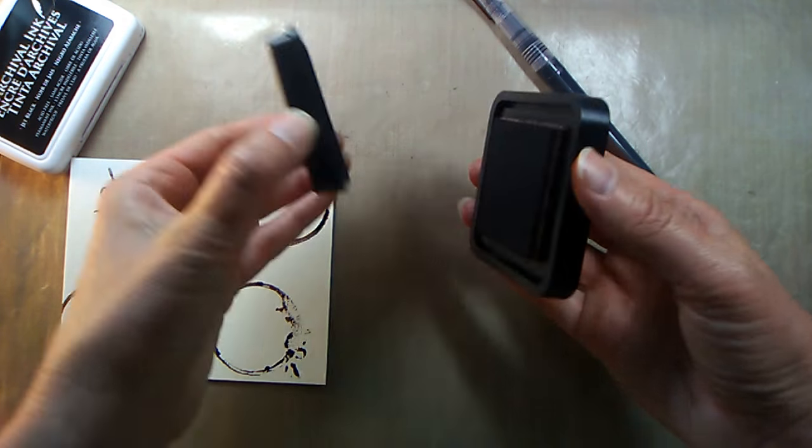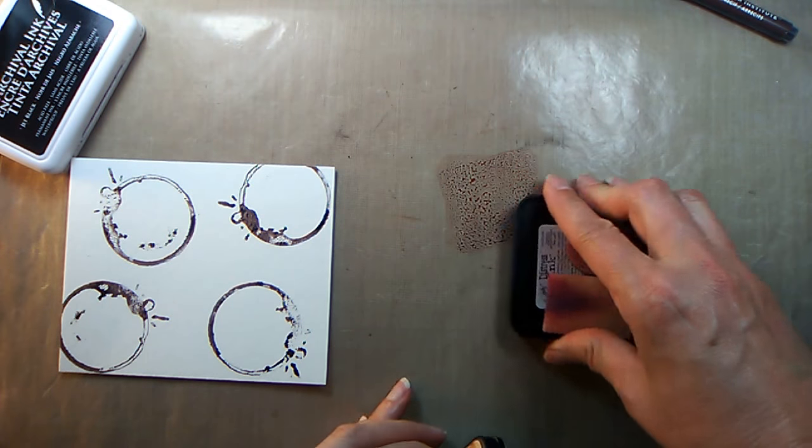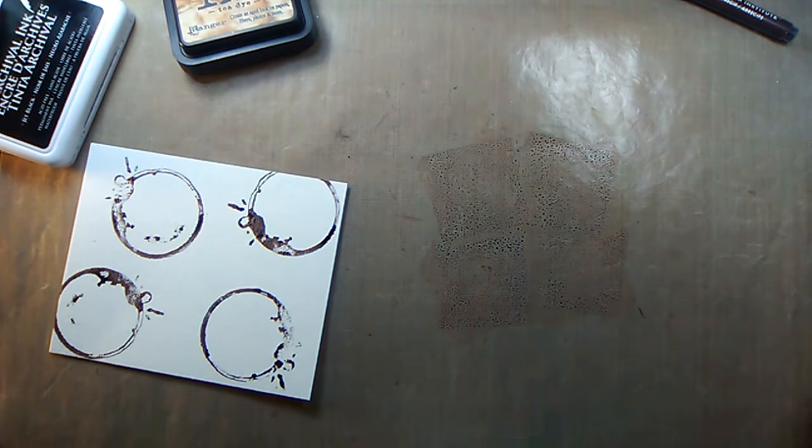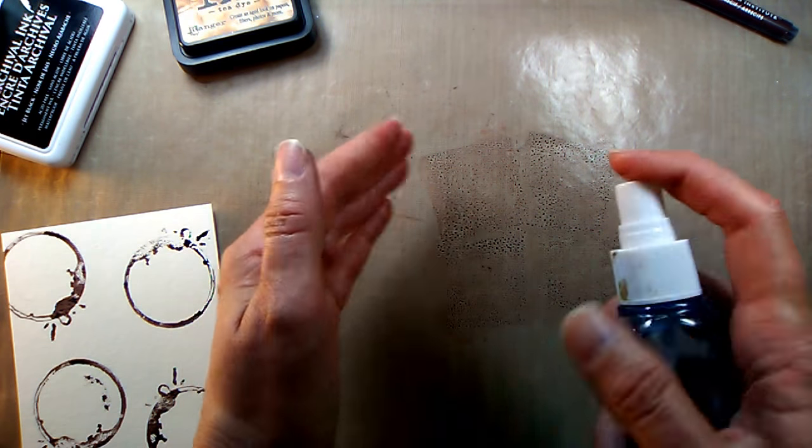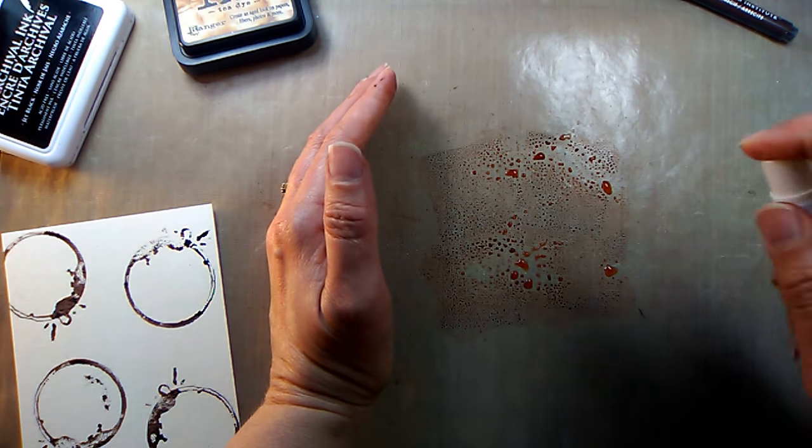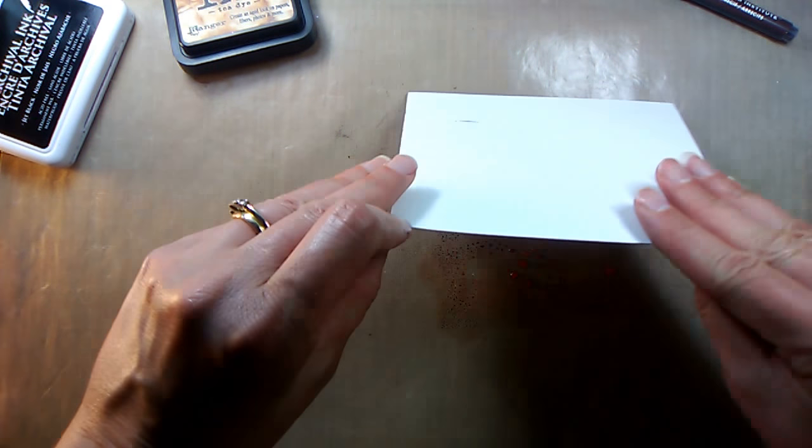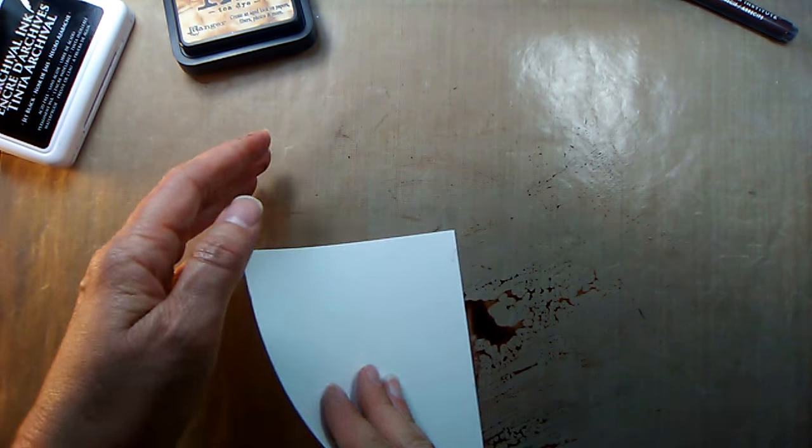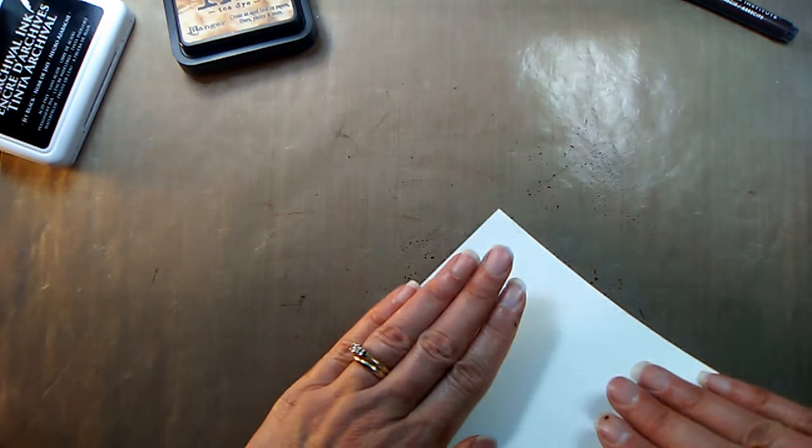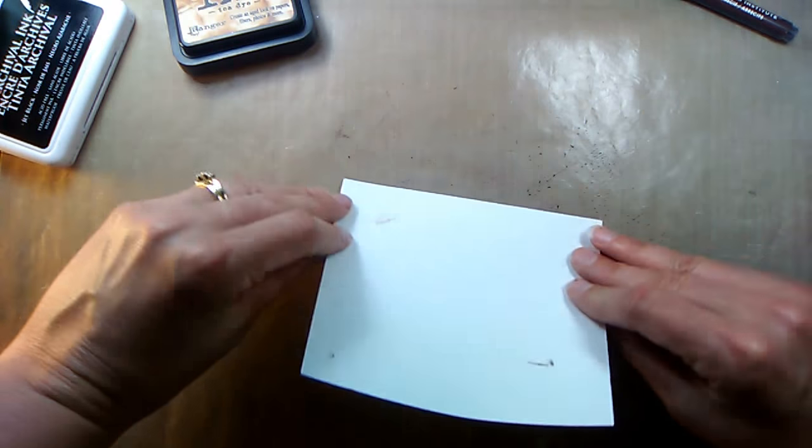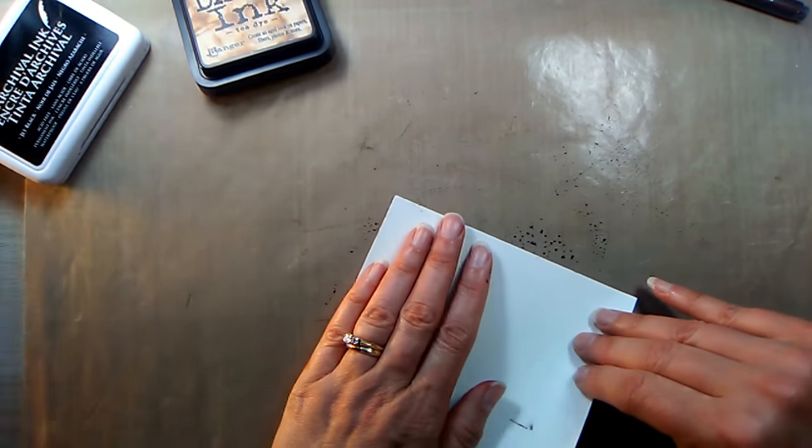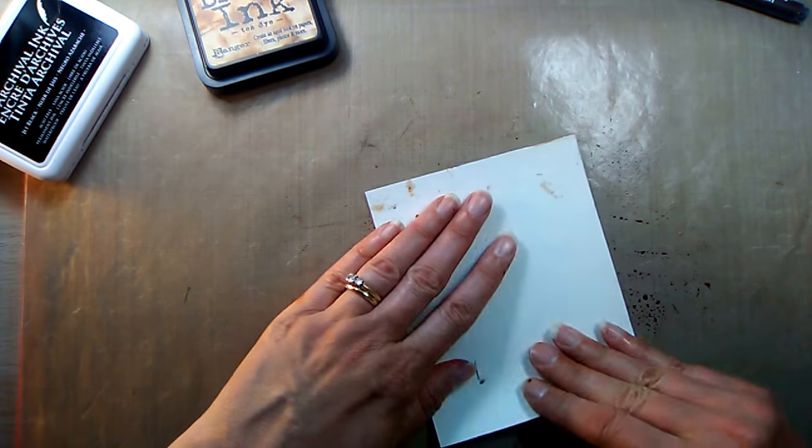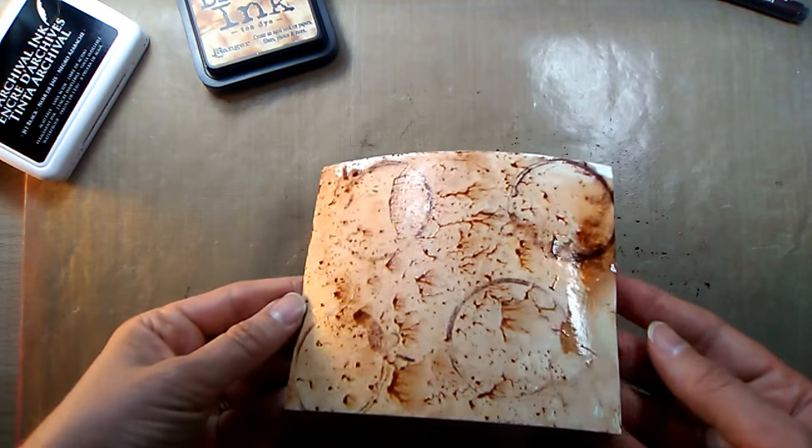Instead of letting that dry, you can press your tea dye pad onto your mat, take a little bit of water and spritz it. Just roll it through like sopping up as much as I can. It's okay to pat and lift because it leaves a really cool texture.